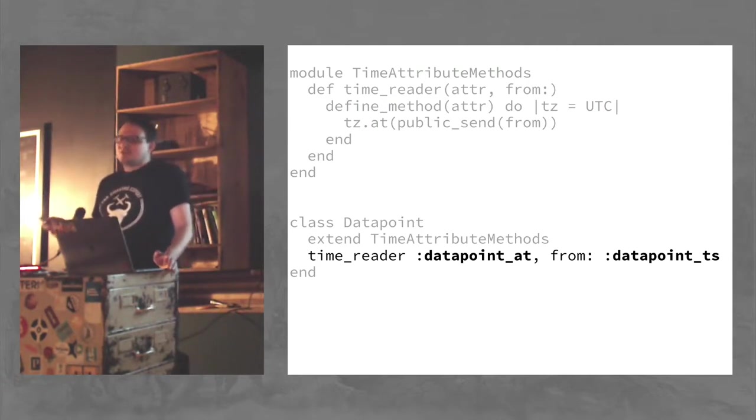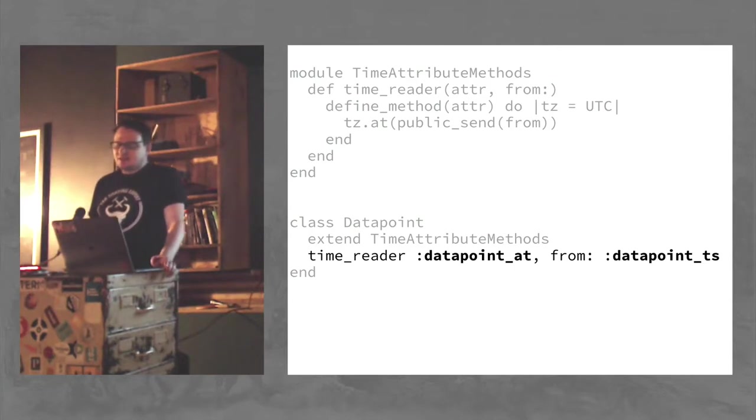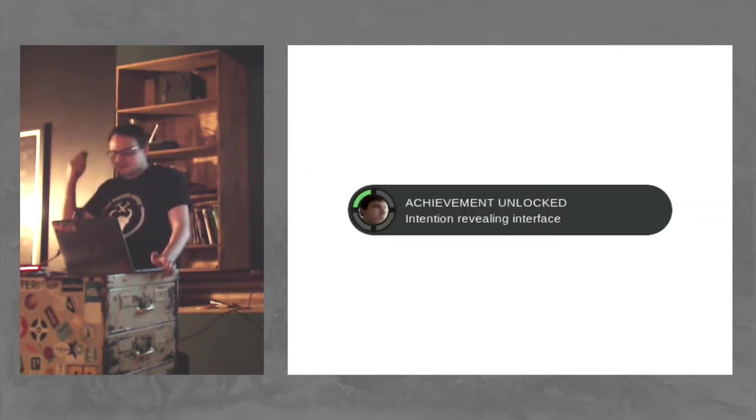But there's still more configuration that needs to go into this because I think it's important for people to know where it's getting the information for this reader. So I used a keyword argument called from so that you can define where that comes from. So not only is that far more explicit and readable, but it also gives you more configurability. Because with the old way, you are depending on a naming convention that something is going to be named underscore ts and your new method is going to be named underscore at. But with this way, you could name things any way you want and you could still be using time reader. So that was my second attempt. Achievement unlocked. I play a lot of games.